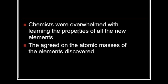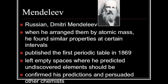Chemists were overwhelmed with learning the properties of all the new elements. But one thing that they did agree on was the atomic masses of the elements that were discovered. And in 1869, Dmitry Mendeleev arranged all the known elements by atomic masses. He found similar properties at certain intervals, and he published the first Periodic Table in 1869. He left empty spaces on his Periodic Table because he predicted that undiscovered elements should be there. Later, his predictions were confirmed and persuaded the other chemists.